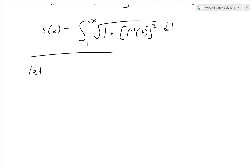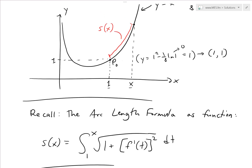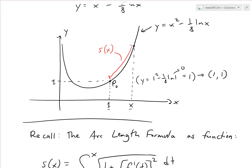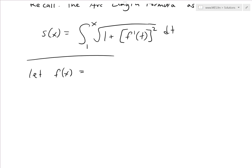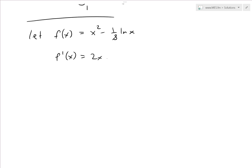If we let f of x equal x squared minus one-eighth ln x, we need to find the derivative. The derivative of x squared is 2x, minus one-eighth times the derivative of ln x which is 1 over x, so f prime of x equals 2x minus 1 over 8x.